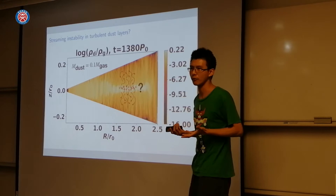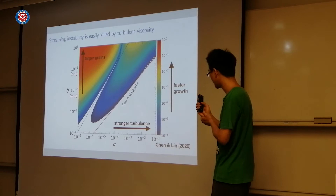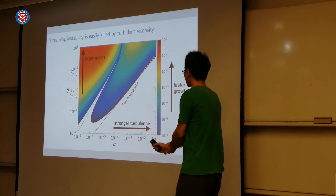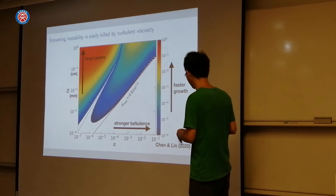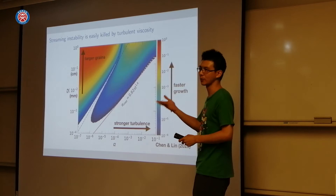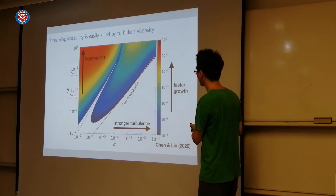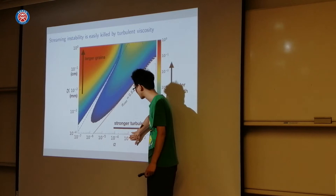To answer that question, I worked with a student, Chen Khan — actually a summer student from 2017 who finally published his summer project this year. So for the summer students in the audience: please try to publish your projects! What we did was develop a simple model of streaming instability with turbulence, where turbulence is modeled as a simple viscosity. He analytically calculated the growth rate — how fast does this instability grow — as a function of grain size, from sub-millimetre to centimetre, and also as a function of turbulence strength. Alpha is the parameterized turbulence level; for protoplanetary disks, we expect alpha to be around 10⁻³ at most, maybe 10⁻⁴ or even lower.